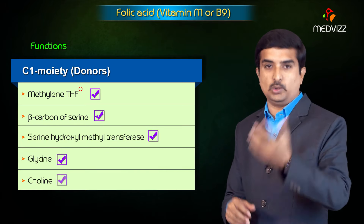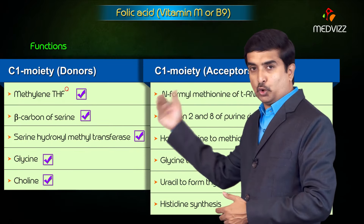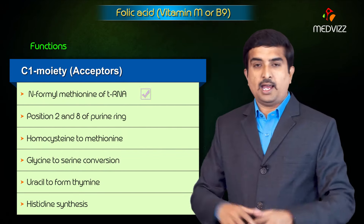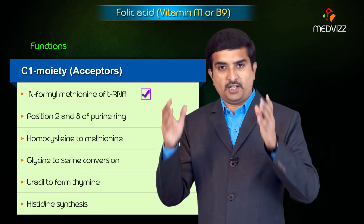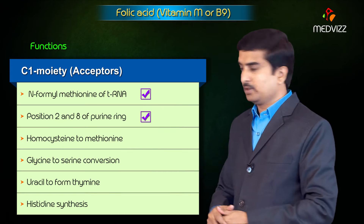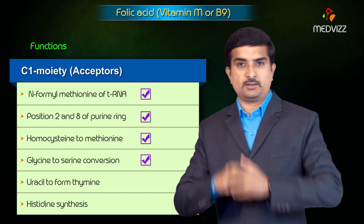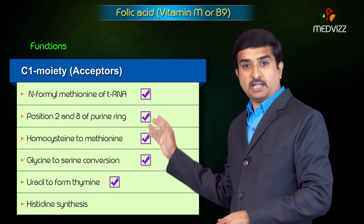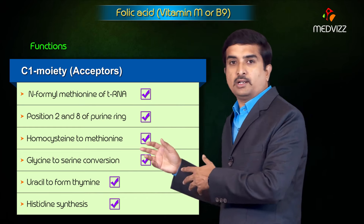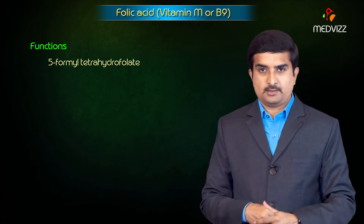The C1 moiety acceptors are as follows: N-formyl methionine of tRNA, positions 2 and 8 of the purine ring, conversion of homocysteine to methionine, conversion of glycine to serine, conversion of uracil to thymine, and histidine synthesis. All these reactions involve folic acid as a one carbon acceptor.